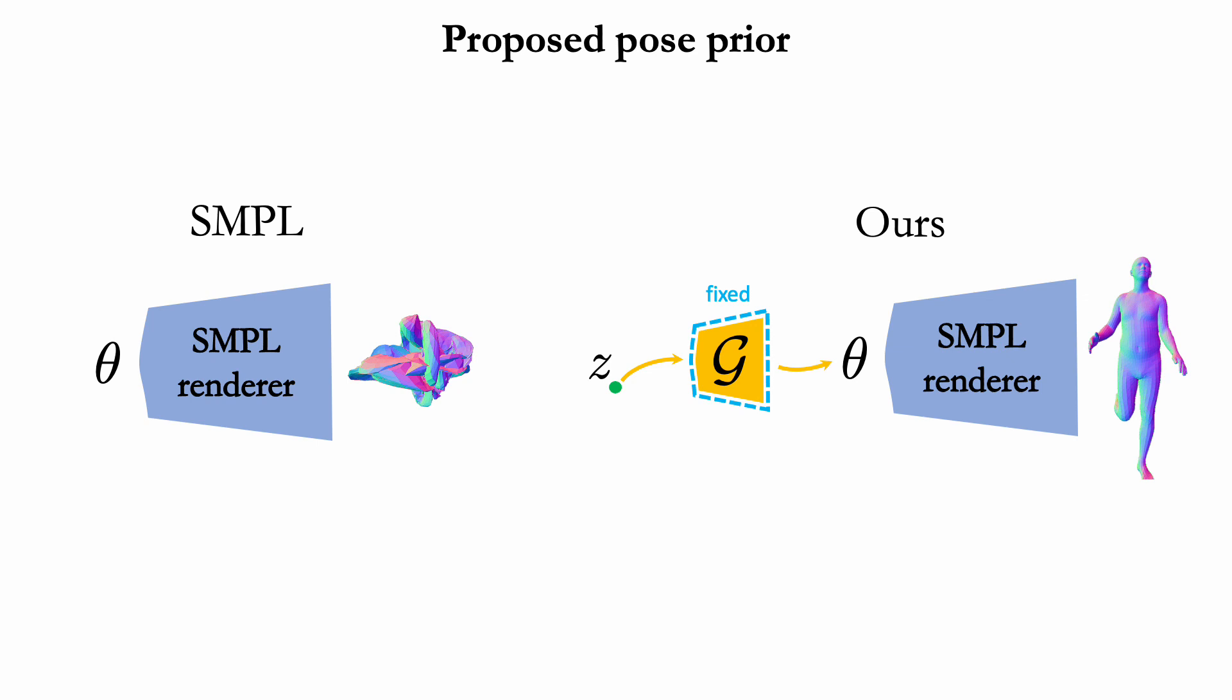To generate plausible body shapes at inference time, we can then sample random latent vectors and fit them into a pre-trained generative model that yields a vector of plausible SMPL pose.